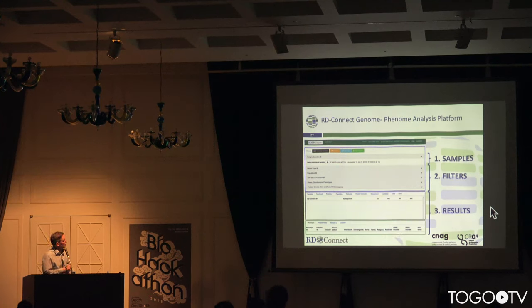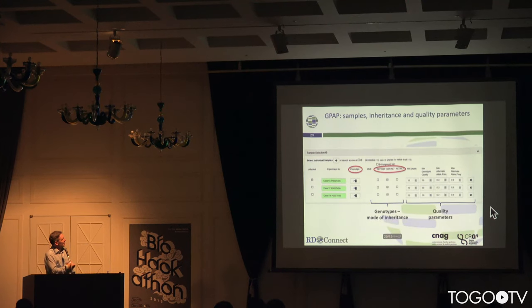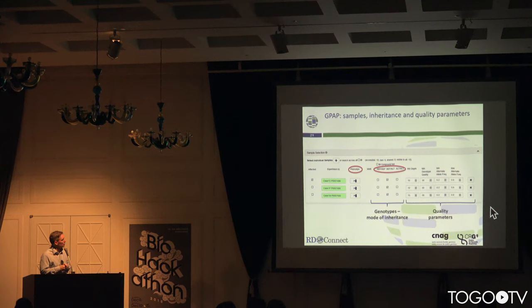This is what it looks like when you log in. We have three parts: you define the samples you want to look at, you define the filters you want to apply, and then you get your results at the bottom. In the sample definition section, you put in your IDs, and there's a direct link to phenotypes. You also define the mode of inheritance you want to apply.